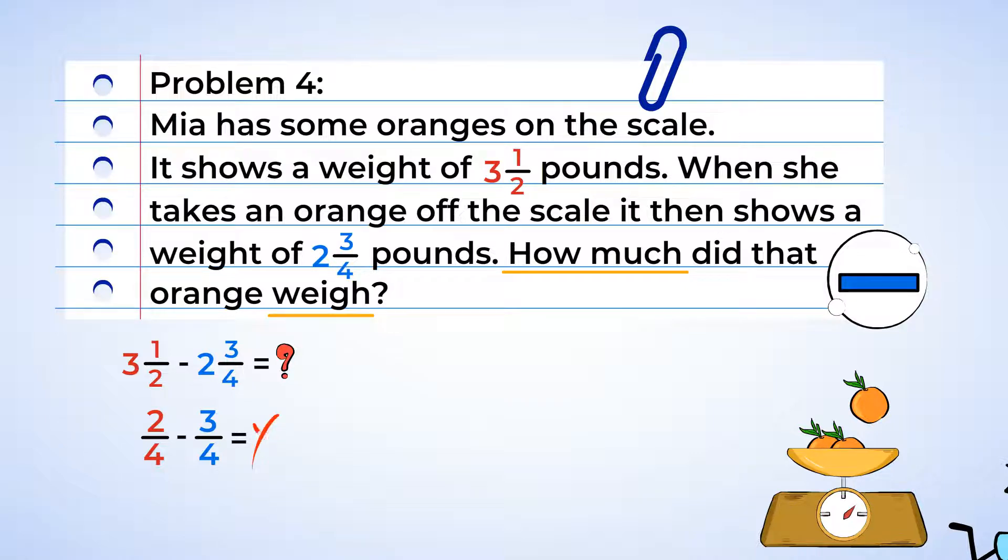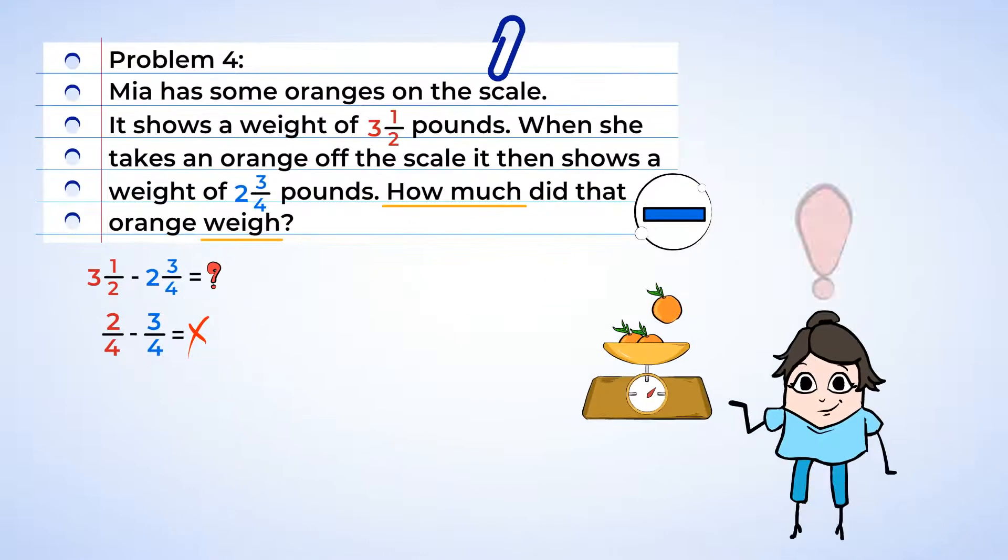Uh-oh, we don't have enough to subtract. I know what we can do. We can borrow from the whole numbers. Now let's convert both fractions into improper fractions, and then multiply by 2 to get to the same denominators.